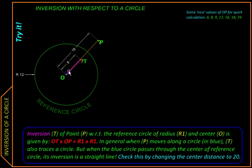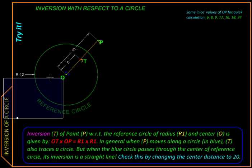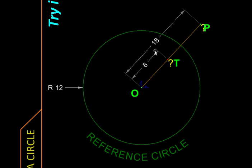And on that ray OP, we find a point T such that the product of the distances OP and OT is equal to the square of the radius of the circle. For example, the two distances OP and OT are 18 and 8 respectively, so their product 144 is the square of the radius 12.